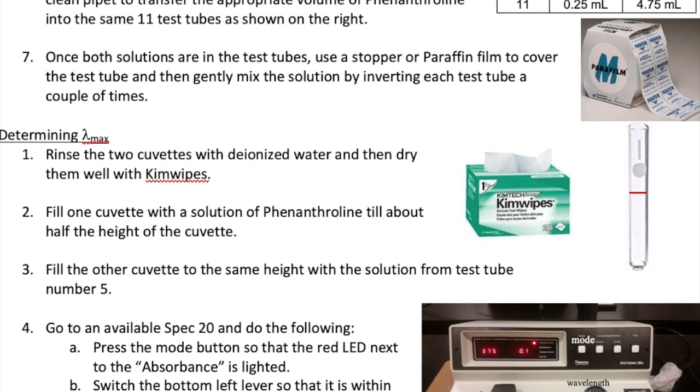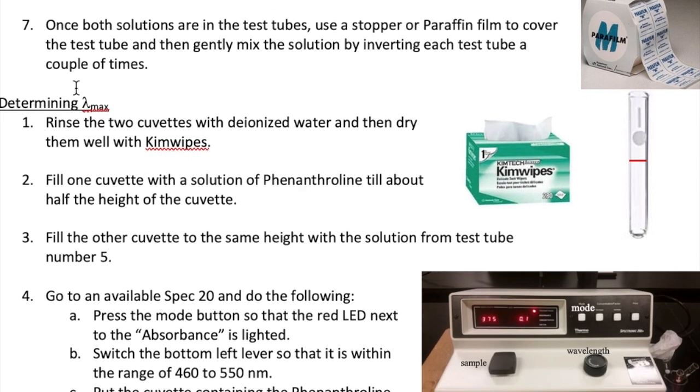Before we can measure the absorbance of the complex ion in test tubes 1 through 11, we must first determine the lambda max, which is the wavelength at which to measure this absorbance. To find the lambda max, we have to scan a range of wavelengths in the blue-green region, as described in video 2.